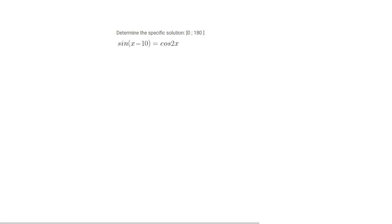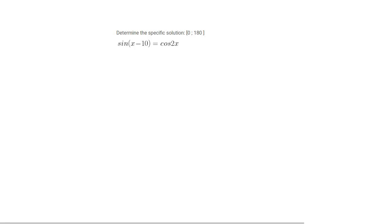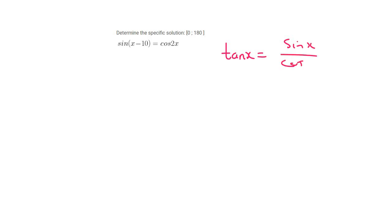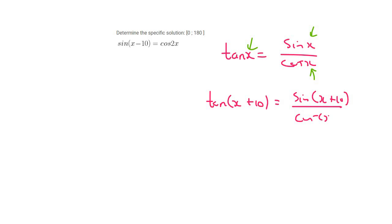Whenever you get a situation or question where you have a sin and a cos but the angles inside are different, you cannot use tan, because tan x is the same as sin x over cos x. Notice that everything has to be the same — you could have something like tan(x+10), but that would be sin(x+10) over cos(x+10). So there has to be a match.